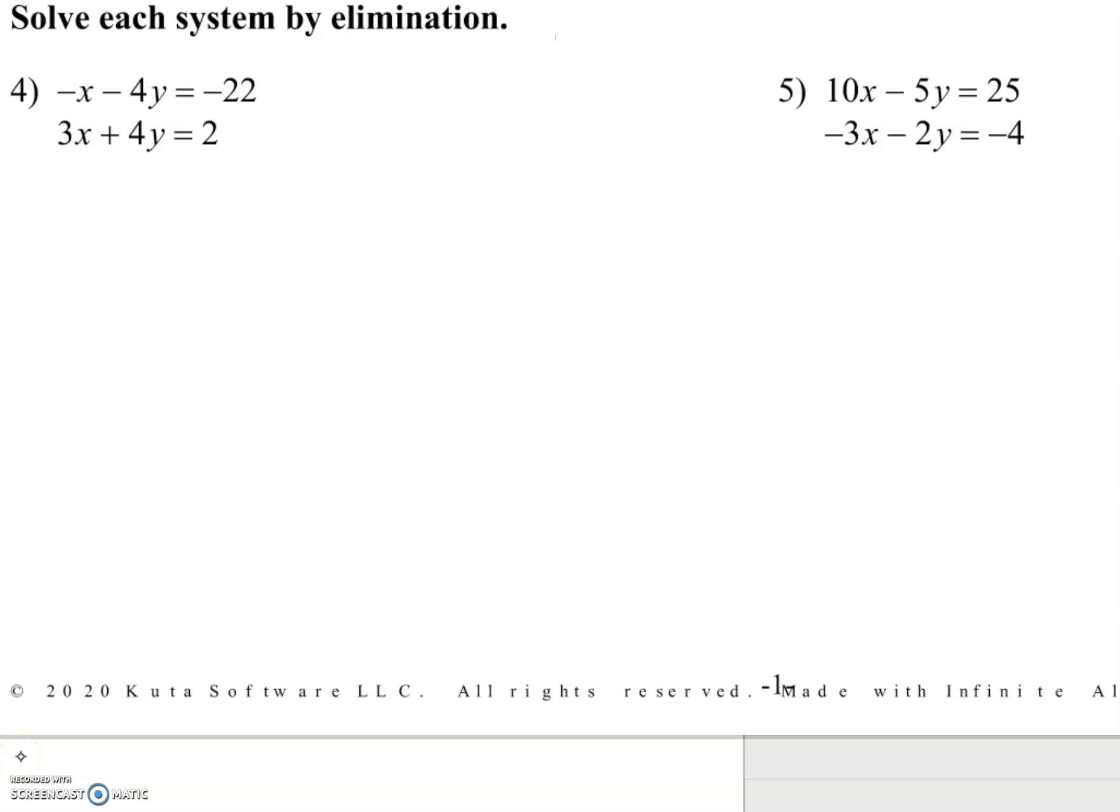All right, the elimination method for solving systems of equations. When you're doing this, you're always adding. You're going to either add the equations or add linear combinations of the equations. You're allowed to multiply the equations then add them, but it's always adding.